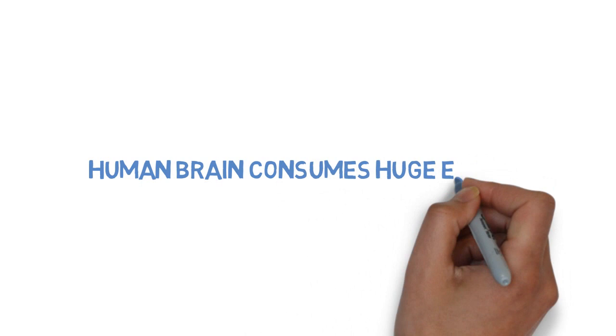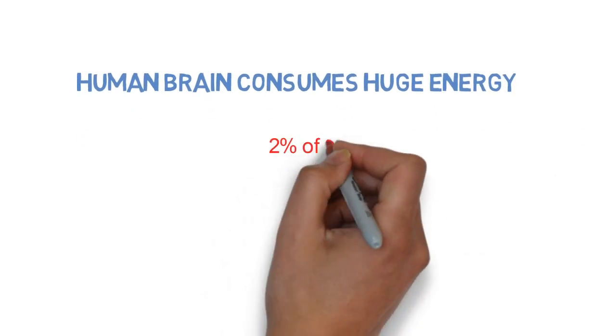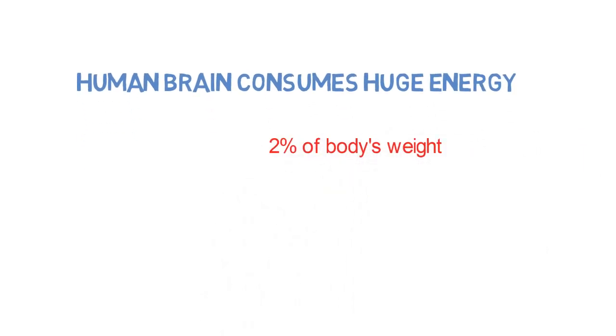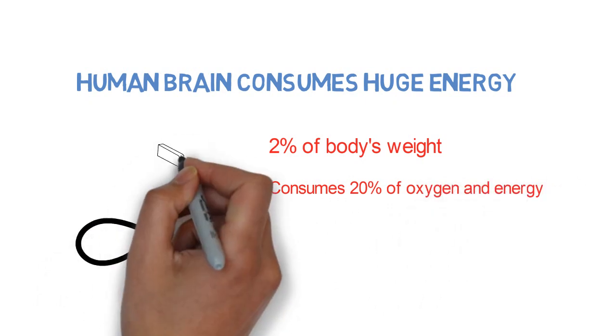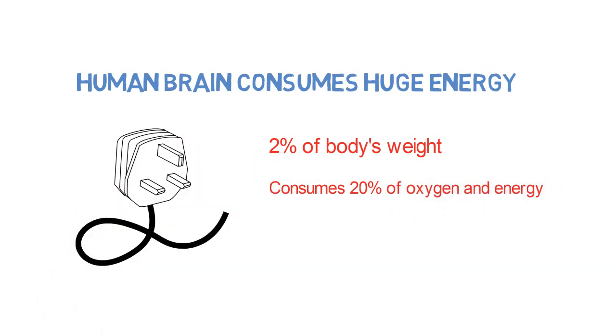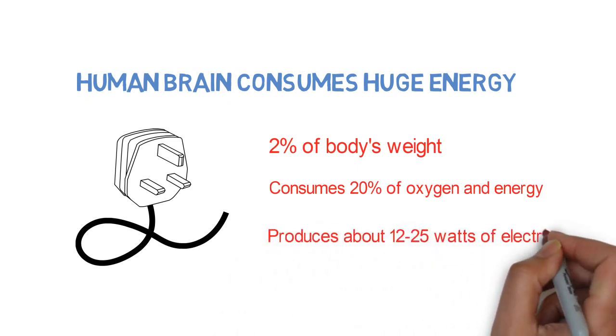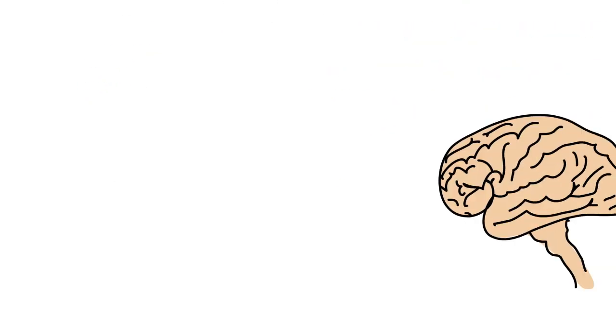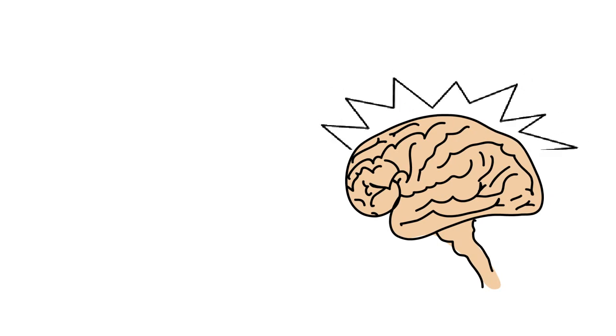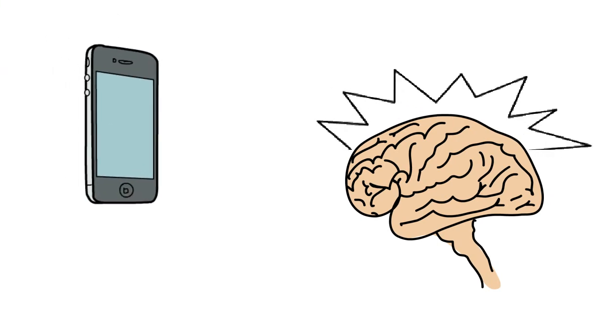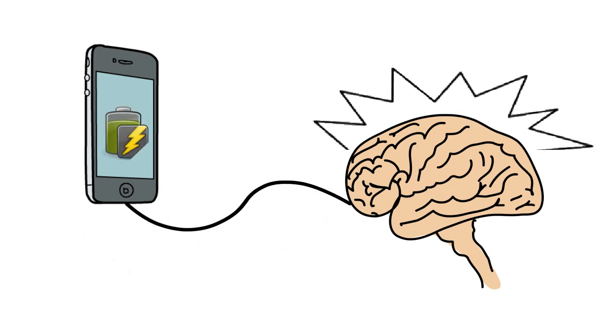Human brain consumes and generates huge energy. Human brain is only about 2% of body's weight but consumes 20% of oxygen and energy. Such high energy is required for a large number of calculations which it carries out. It produces about 12 to 25 watts of electricity. It would be so convenient if you could charge your mobile phone from your brain's electricity through some neural charger. But this energy sucked from your brain might lead to some part of it going down due to shortage of energy. So, caution is advised.